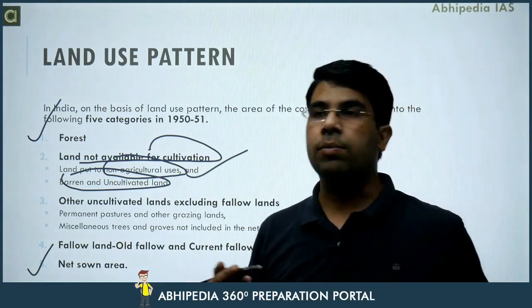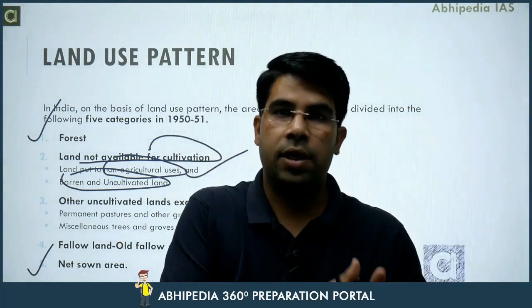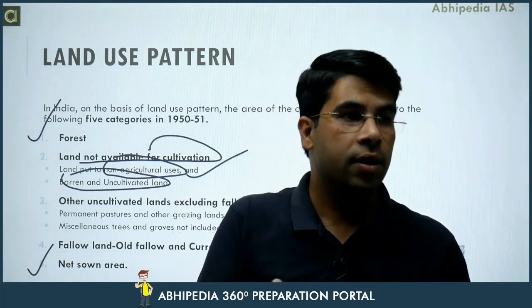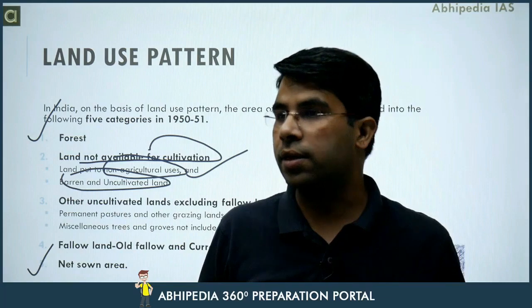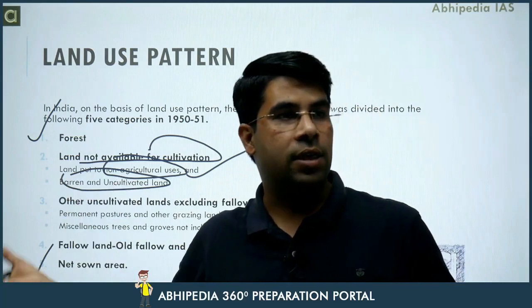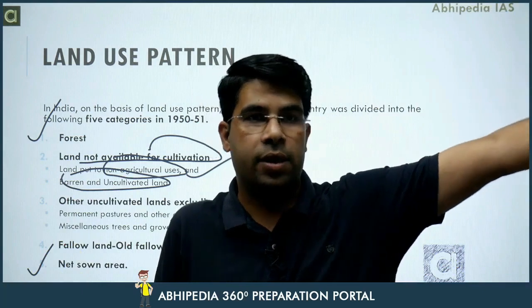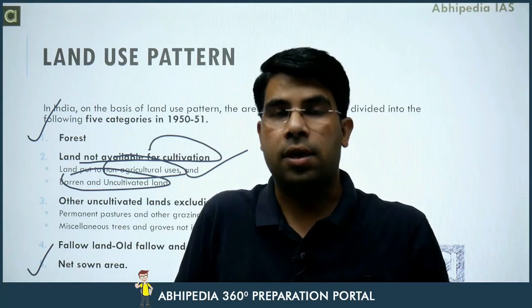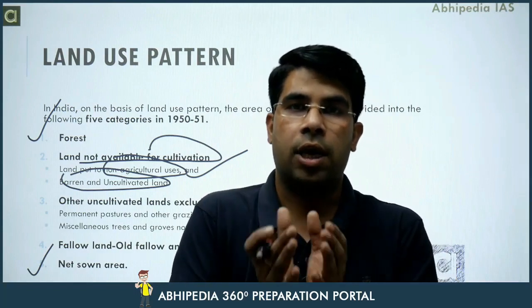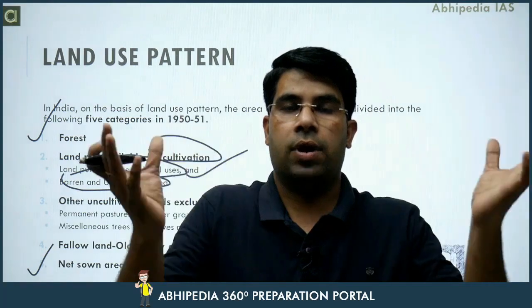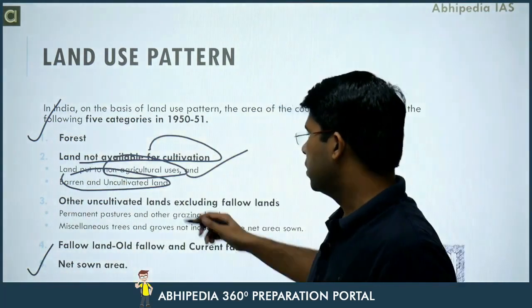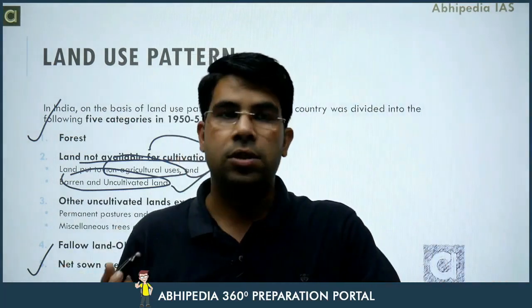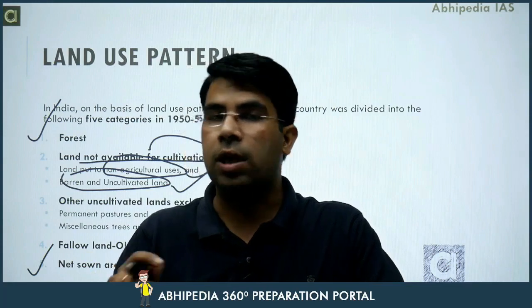Land not available for cultivation includes non-agriculture use — meaning land being used for settlements. This land is of good quality and cultivation is possible, but it's been used for cities like Chandigarh and Panchkula. Urban sprawl is happening — construction over cultivable land. Then there is barren land, which is uncultivated and not fit for cultivation.